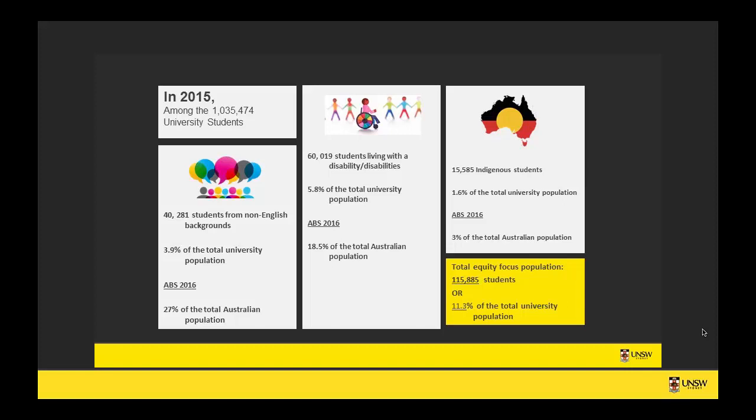For a few statistics: at last count in 2015 there were just over a million university students in Australia. Of this, 40,281 were from non-English speaking backgrounds, so that's 3.9% of the population. According to the Australian Bureau of Statistics in 2016, 27% of the total Australian population were from non-English speaking backgrounds, so those figures aren't quite representative of the wider population.